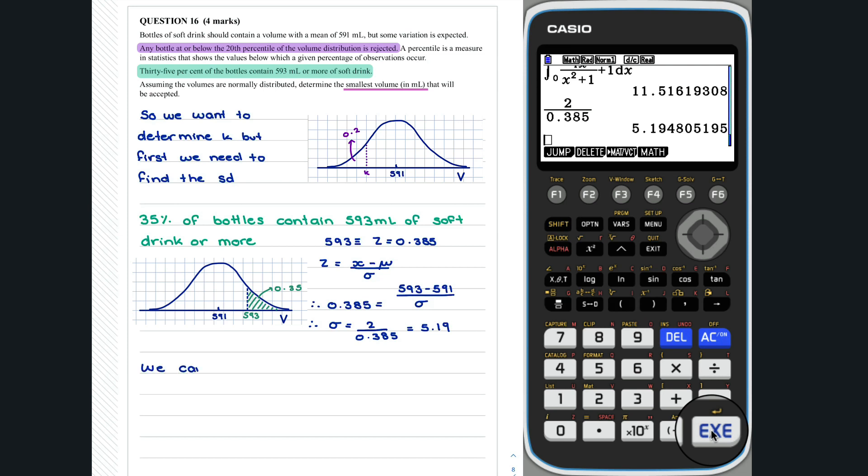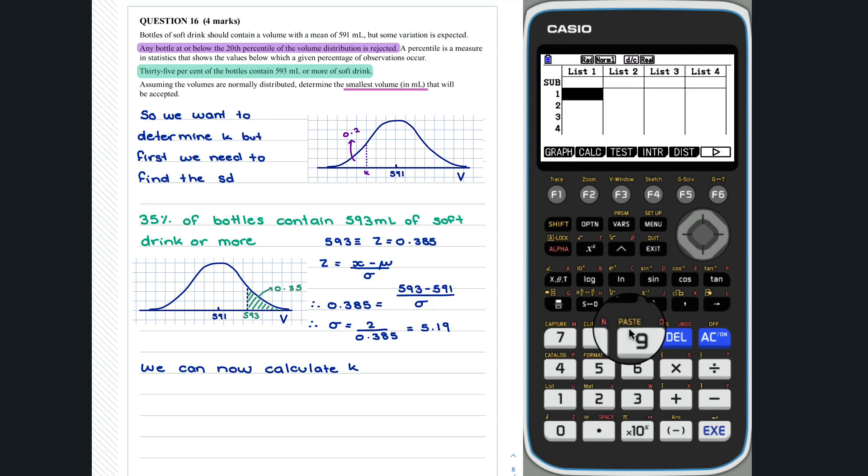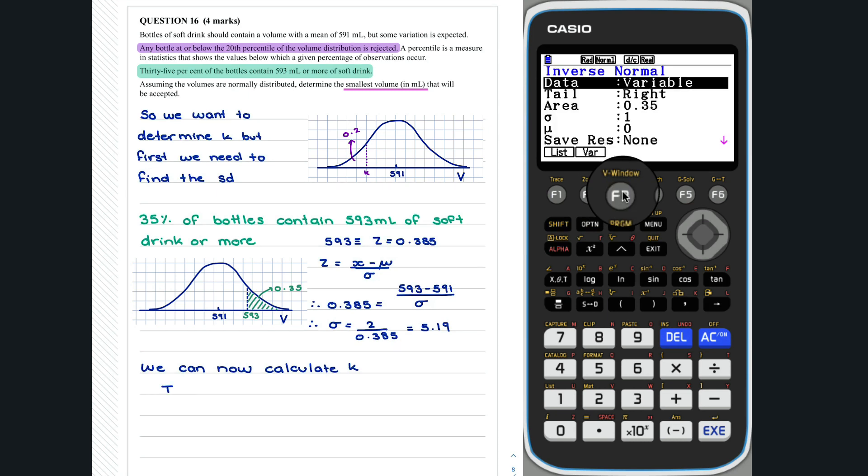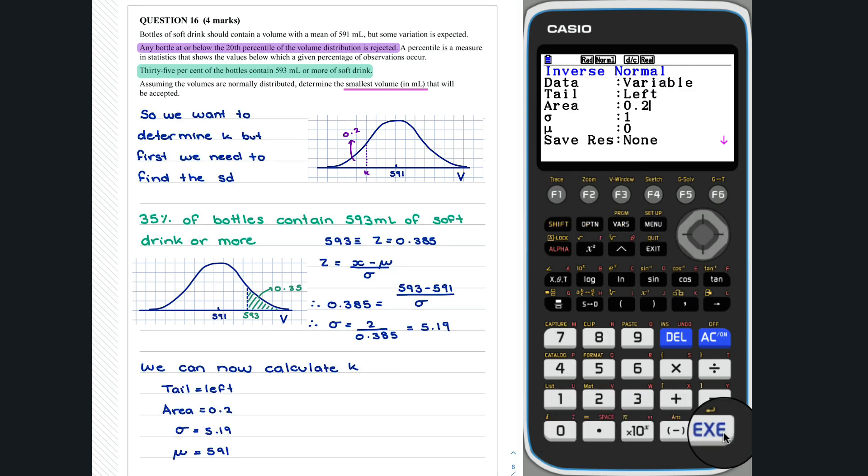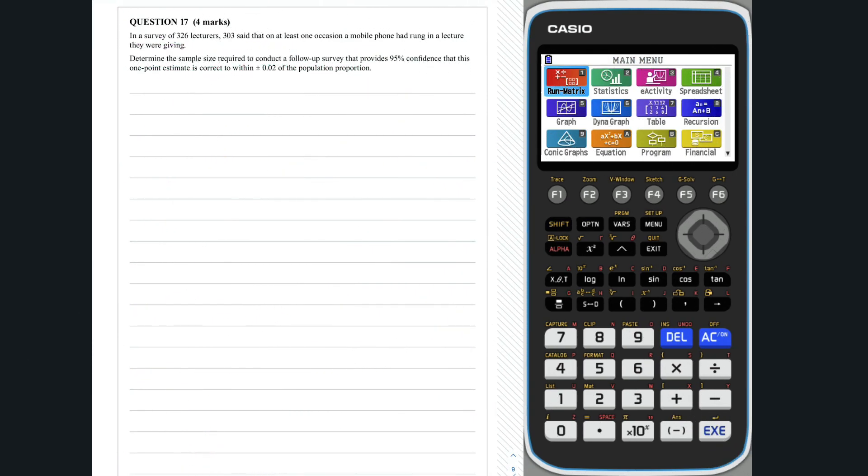We now have everything we need to calculate K. We want to determine K for a specific area and thus we need to use inverse normal. So, the smallest value that will be accepted is 587 milliliters to the nearest milliliter.